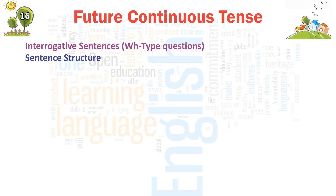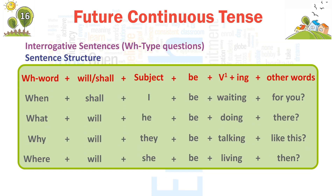Interrogative Sentences — WH type questions. Sentence Structure: WH-word + will/shall + subject + be + verb(-ing) + other words. When + shall + I + be + waiting + for you? → 'When shall I be waiting for you?' What + will + he + be + doing + there? → 'What will he be doing there?'